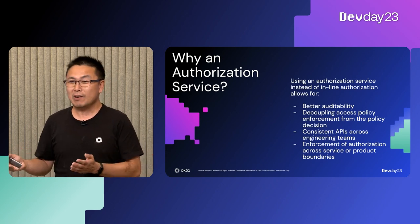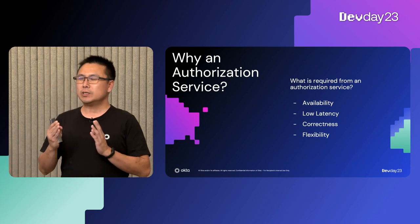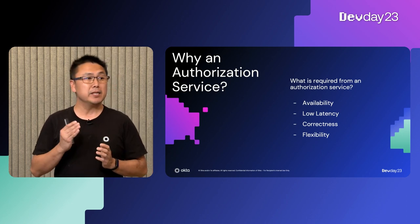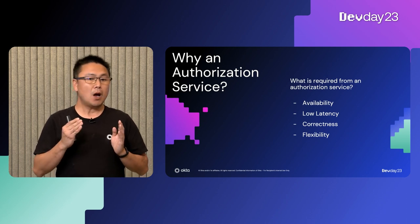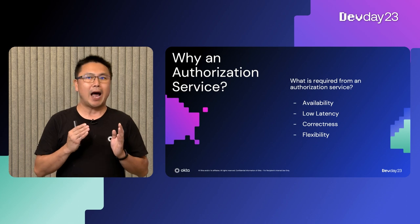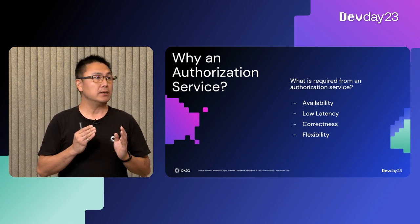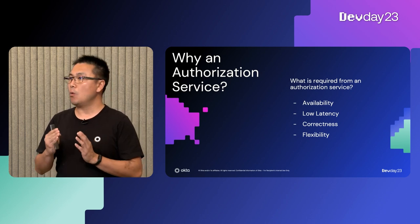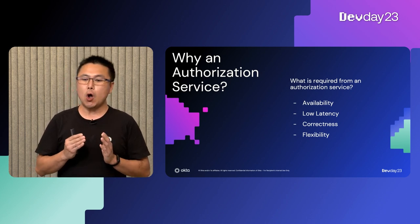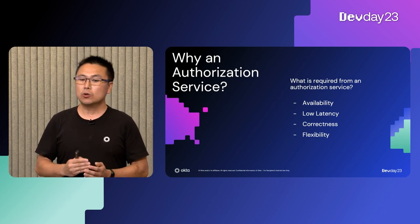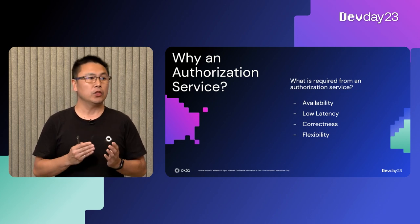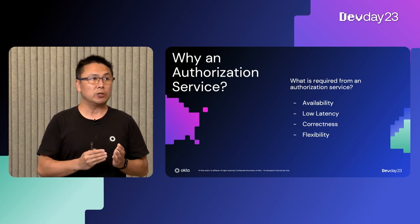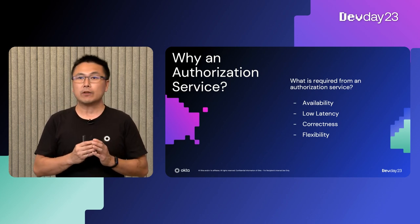If you are going to choose an authorization service, what things do you need to look for? First, it needs to be highly available — because authorization is needed on every API request, any downtime means users will not be able to access your services. Second, it needs to have low latency — every delay in your authorization service adds up to the delay the user sees when accessing your API. Third, it needs to be correct, meaning you need to be able to have assertions and tests on your model and data.